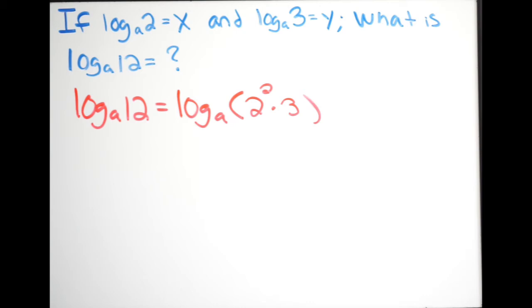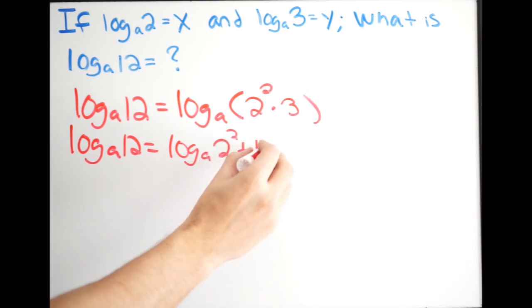So now I want to use my properties of logs, and I know that if I have the same base and I'm dealing with a log and I'm multiplying, I can rewrite that by using addition. So for example, just rewriting this I get log base a of 12 equal to, here I get log base a of 2 to the second power plus log base a of 3.